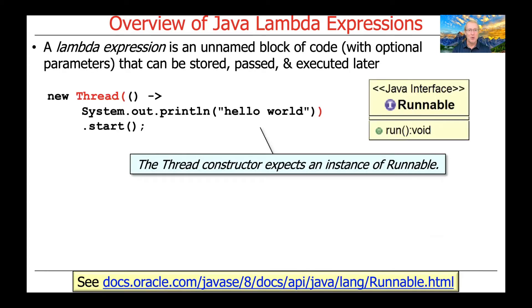Let's take a look at a simple example. Here we're going to create a new thread. A thread, as you may recall, has a constructor that expects an instance of a Runnable. Recall that a Runnable is a so-called functional interface — we'll talk more about functional interfaces shortly — that has a single method called run that takes no parameters and returns no value.